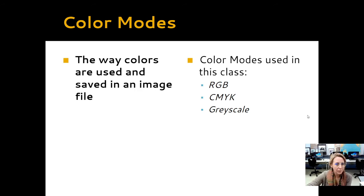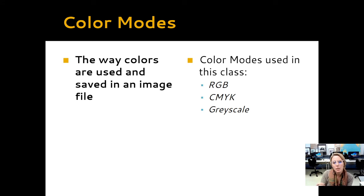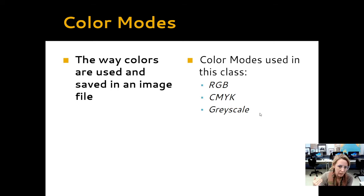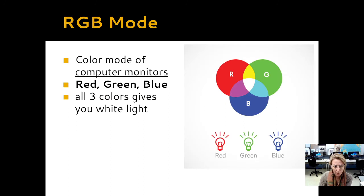Color modes are not file types, but they are important to understand. There are three color modes. Color modes are how the computer or printer is going to see and receive color data. When you save your file, whether it's a JPEG or PSD, you can use one of these three different ways of saving your color: RGB, which is red, green, and blue; CMYK, which is cyan, magenta, yellow, and black; and then obviously grayscale. There's also bitmap, but we're not going to use bitmap at all.